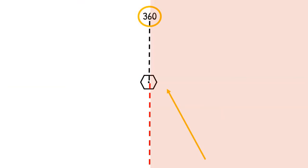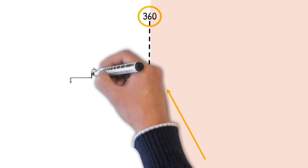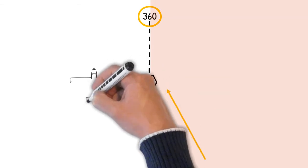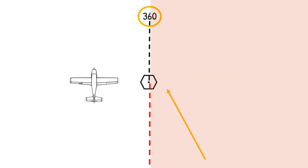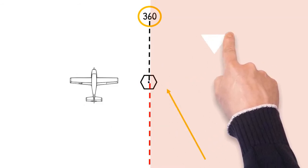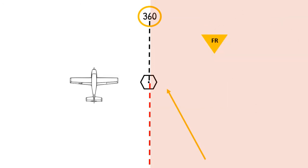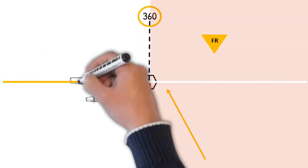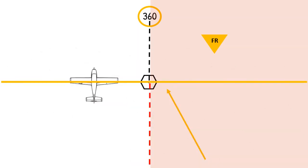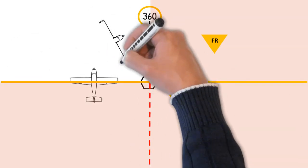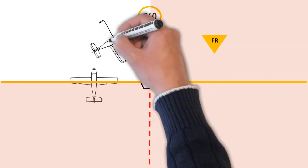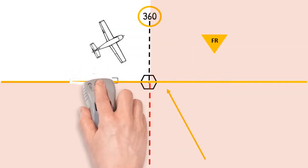Now we're going to use that same example. We've got 360 tuned in the OBS. We're showing the deflection of the CDI to the right, which means we're left of course. So we're going to draw the aircraft left of course. Now we're going to notice that we've got a FROM flag. So we're going to draw our horizontal yellow line to determine which side of the VOR we're on. And because we've got the FROM side, we're on the same side as the 360 radial because it radiates from the VOR. And that's how we determine our position in this example.